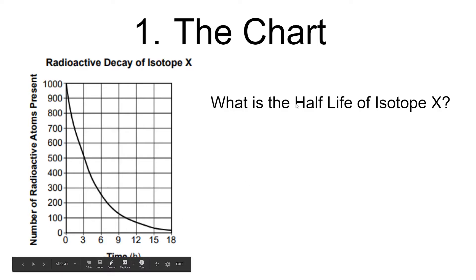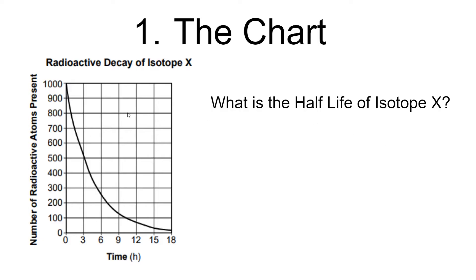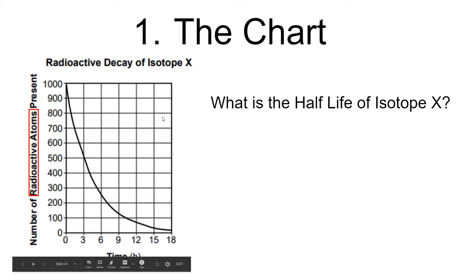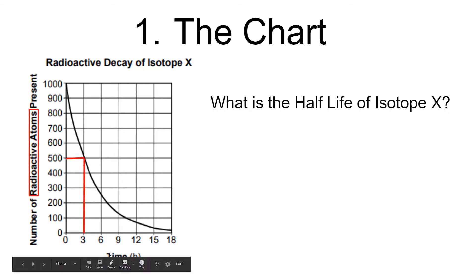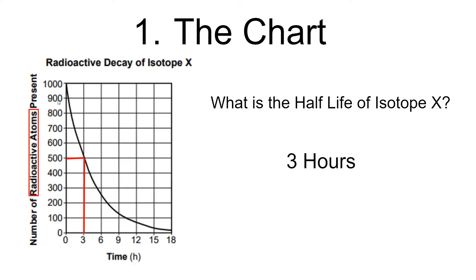Your question would be: what's the half-life of isotope X? Simply, you'd find the number of radioactive atoms present. You'd look and say that 1,000 is the starting amount. And after one half-life, you'd see that 500 is left over because 500 is one half of 1,000. You'd read down to see that it took three hours. Three hours is the half-life of isotope X. That's the chart method.